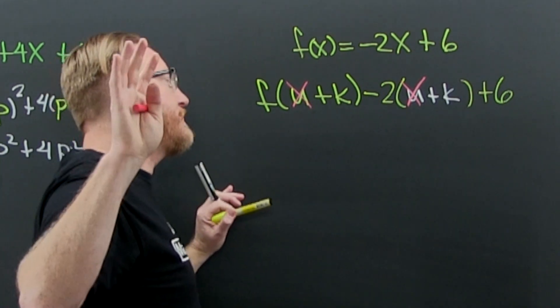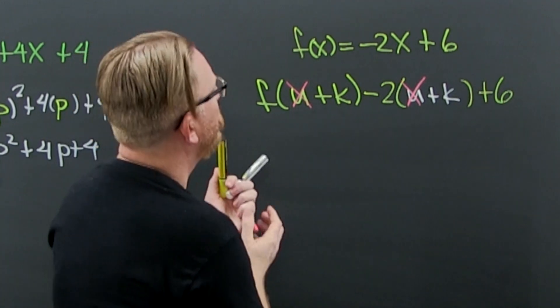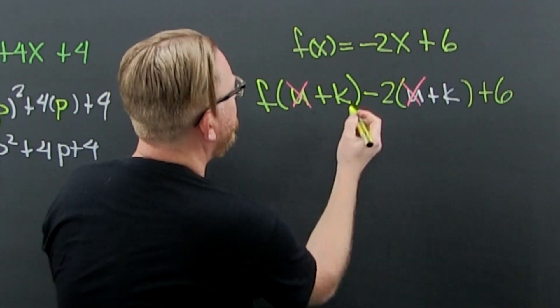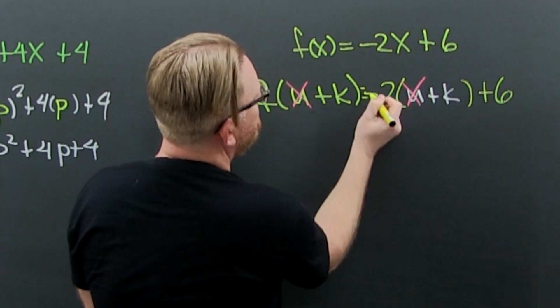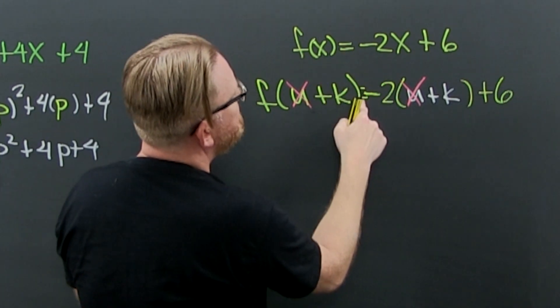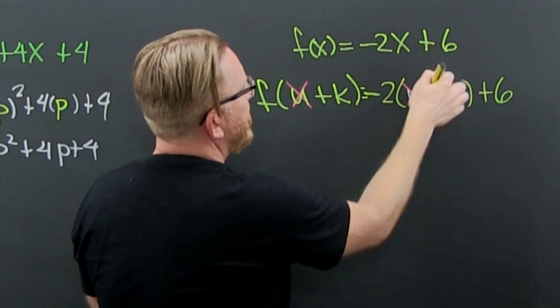This should have been equal to -2(u+k). I was replacing that x and that x.